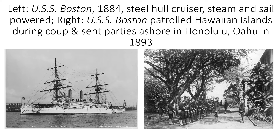This is the USS Boston, 1884 — a steel hull cruiser and a steam and sail powered vessel. It has sails but relies primarily on its steam boilers, and its hull is made of steel. The engine and boiler technology was improving, so heavier ships made of steel and better protected were being manufactured from the 1880s on. This is the USS Boston's sailors patrolling the streets of the Hawaiian Islands in 1893. These sailors did not actually take part in the coup, but by providing security they prevented the royalists from fighting back against the insurrectionists. Hawaii then ceases to be a monarchy, and just a few years later it's annexed by the US — an example of gunboat diplomacy.